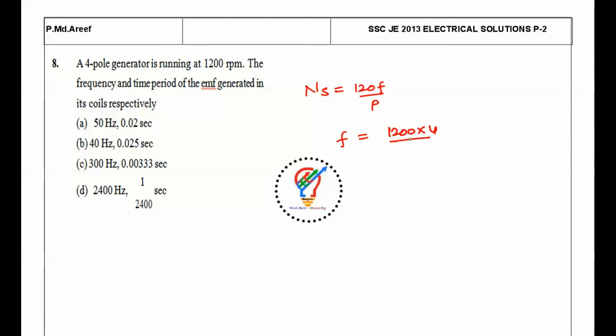F equals 1200 times 4 divided by 120, which is 40 Hz. Now the time period T is nothing but 1 by F, which equals 1 by 40, which is 0.025 seconds. The option B is correct.